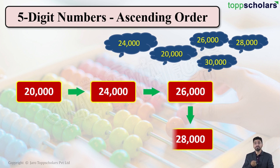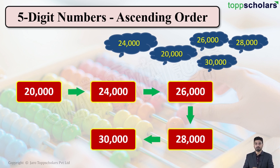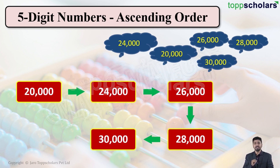So we write down 28,000. And the next, which is also the last number, is 30,000. So we write down 30,000. As you can see, my dear students, we have arranged the numbers from the smallest number, that is 20,000, to the largest number, that is 30,000. In short, we have arranged the given five-digit numbers in ascending order.